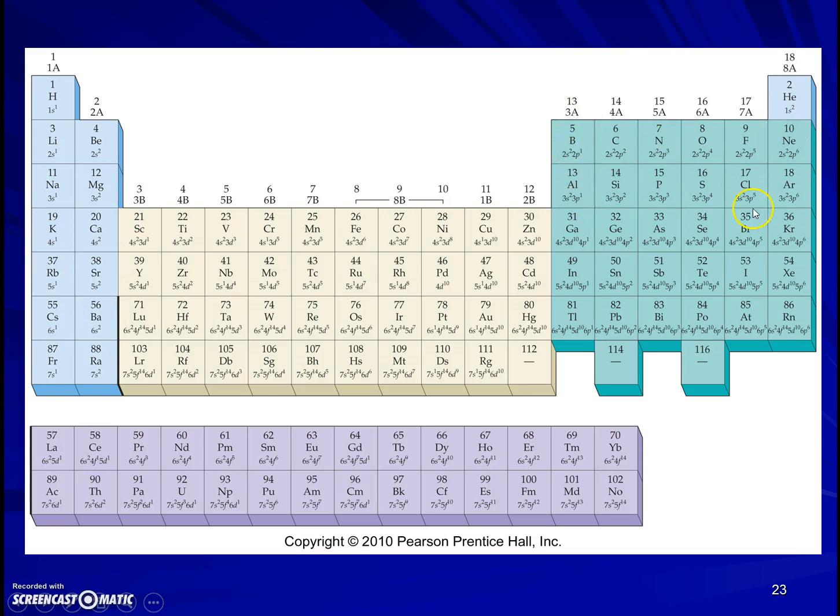This block is six elements wide, and every configuration here ends in p. The first column, they all end in p1, 2p1, 3p1, 4p1, and so on. The second column, they all end in p2, 2p2, 3p2, and so on. Out to p6, 2p6, 3p6, and so on. So we call this the p block because they all end in p, and that makes sense because we said that p sub-levels have three orbitals.